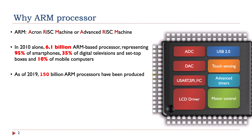ARM processors and microcontrollers are most popular in digital embedded systems. They are used in industrial instrument control systems, mobile devices, wireless networks, sensors, and many more. In 2010 alone, 6.1 billion ARM-based processors were used in smartphones, digital TVs, and mobile computers. And as of 2019, 150 billion ARM processors had already been produced. This architecture is truly widely used across different applications.